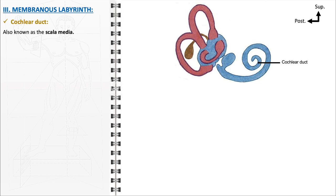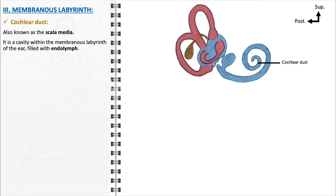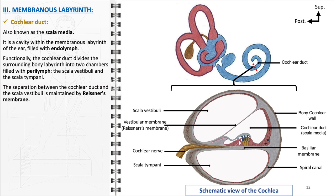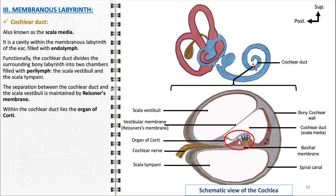The cochlear duct, also known as the scala media, is a crucial component of the membranous labyrinth. It is a fluid-filled cavity containing endolymph, a potassium-rich fluid crucial for auditory transduction. Functionally, the cochlear duct acts as a divider within the cochlea, segmenting the surrounding bony labyrinth into two chambers filled with perilymph: the scala vestibuli above and the scala tympani below. The separation between the cochlear duct and the scala vestibuli is maintained by Reissner's membrane, which is critical in maintaining the distinct ionic composition of the endolymph and perilymph. Within the cochlear duct lies the organ of Corti, responsible for converting mechanical sound vibrations into electrical impulses, with hair cells stimulated by the movement of the basilar membrane.